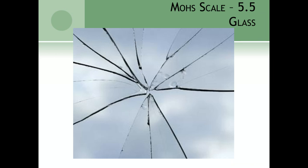There is naturally occurring glass — volcanic glass and beach glass from lightning strikes — but glass has no organized arrangement of atoms. At 5.5, glass would actually cut an iron nail, and you could not take an iron nail and cut glass. We need to distinguish between scratchability, which is what hardness is about, and smashability — I could break a piece of glass with an iron nail, but I cannot scratch or cut it.